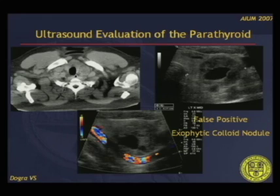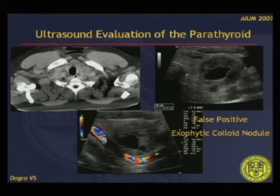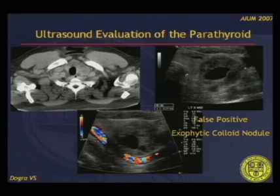This case is interesting. The first image is a CT showing a large, well-defined mass called a parathyroid adenoma. Subsequently, ultrasound was performed and on grayscale, the mass was seen to arise from the thyroid gland — not a parathyroid. It was confirmed to be an exophytic colloid nodule.